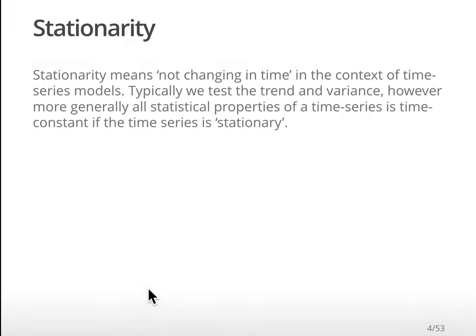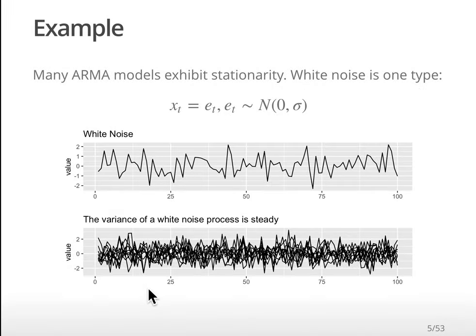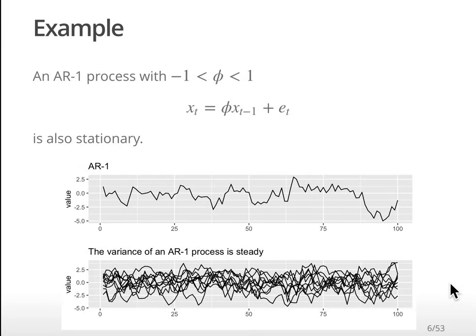The first thing we need to do is evaluate stationarity - the idea that the time series is not changing in time, basically fluctuating around a level. Here's an example: this is just white noise, fluctuating there. But we can also have autocorrelated stationary processes. Here's an example of an AR1 - it's just fluctuating around a level.